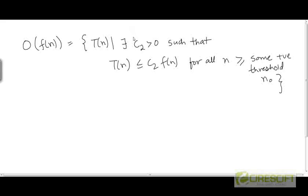If you compare this with the formal notation for θ, we only have an inequality for the upper bound here. For θ, there needed to exist two constants C1 and C2 such that T was not only bounded from above by C2 times f, but also bounded from below by C1 times f. So T had to be sandwiched between two constant multiples of f. Here we are only talking about an upper bound, which is a relatively loose bound because there is no constraint on T being bounded from below.